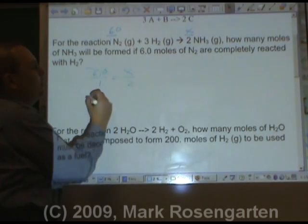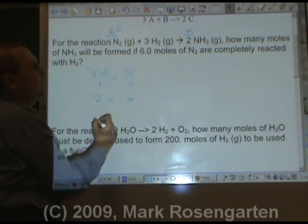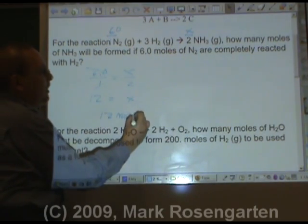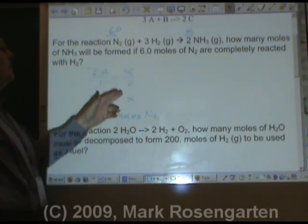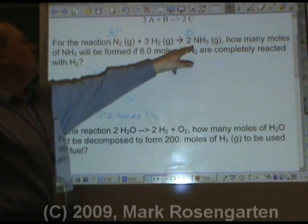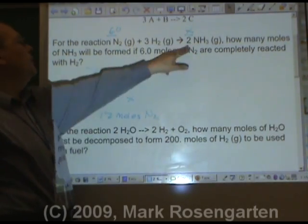Six times two is twelve equals one times X is X. Twelve equals X, twelve moles of NH3. And this makes sense because it's a one to two ratio, so whatever N2 is, NH3 is going to be twice as much. One to two, six to twelve.